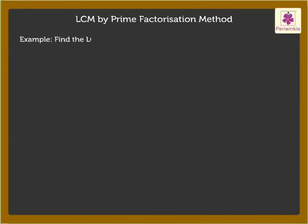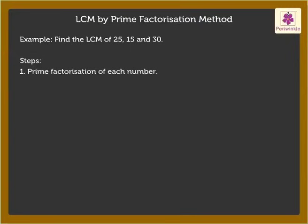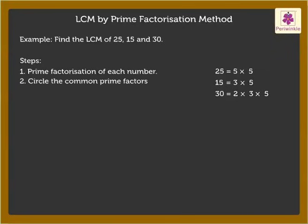Let us find the L.C.M. of 25, 15, and 30. We begin by finding the Prime Factorization of each number. You can find it either by repeated division or by building the Factor Tree. We get the Prime Factorization of 25 as 5 into 5, 15 as 3 into 5, and 30 as 2 into 3 into 5. Step 2: Circle the Common Prime Factor occurring in all the numbers. Here the Common Prime Factor is 5.